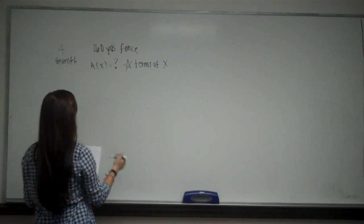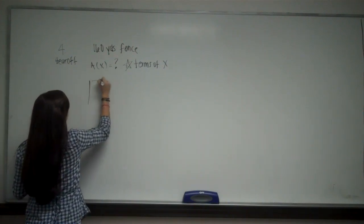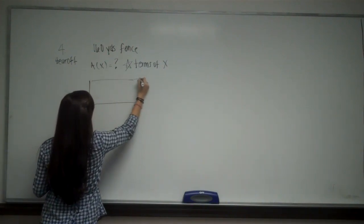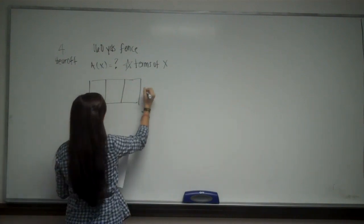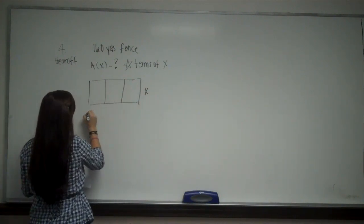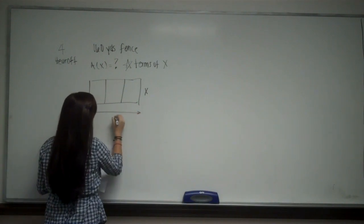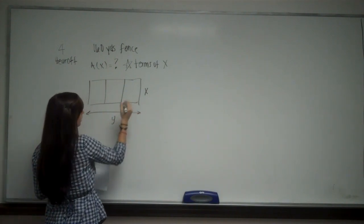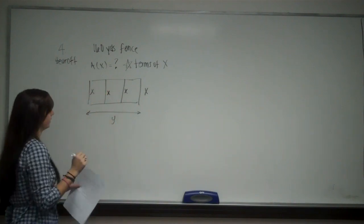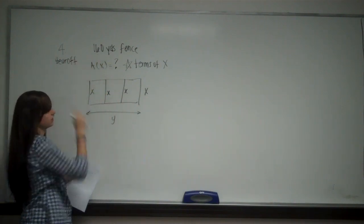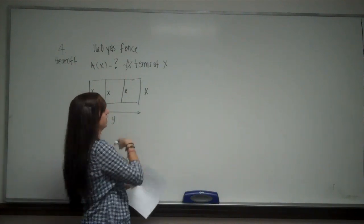And then they want us to define the domain. So we have a piece of land with three equal areas, and they tell us that x is this side and y is the whole bottom. So if it's equal, that means that this is also x, this is also x, and this is also x.